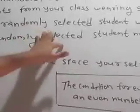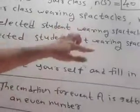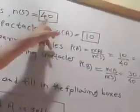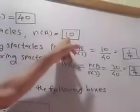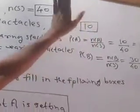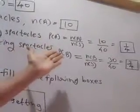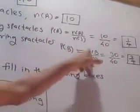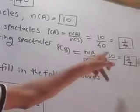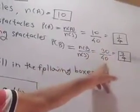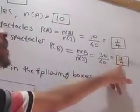Then probability of randomly selected student not wearing spectacles. Out of 40 students, 10 students wearing spectacles. Therefore number of students not wearing spectacles will be 30. So P(B) equal to N(B) upon N(S), 30 upon 40. Zero cancel. Probability will be 3 upon 4.